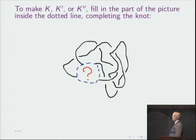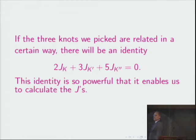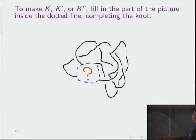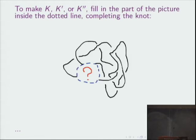So this identity isn't going to be true for every three set of knots. I have to tell you how the three knots should be related to make the identity true. To explain that, I've drawn something which isn't a knot. It's not a knot because something is missing. So out here, we've drawn a bit of a knot. But the blue dotted line, inside the blue dotted line I've left a gap, represented by the question mark. To make a knot out of this thing, we would have to—there are four strands that end on the blue dotted line. And to complete the picture, we need to somehow connect those strands.